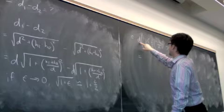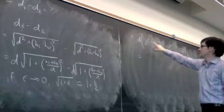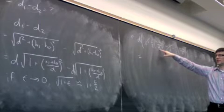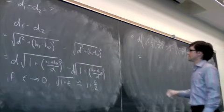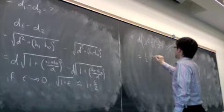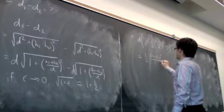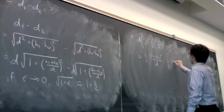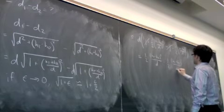And this one cancels with that one. This one cancels with that one. So that's equal to 1/2 (hₜ minus hᵣ)²/d minus 1/2 (hₜ plus hᵣ)²/d.